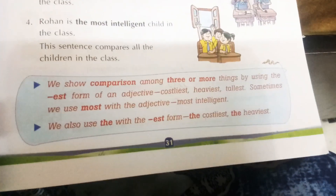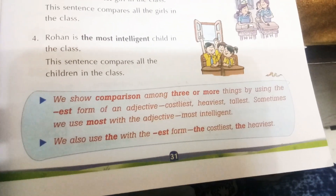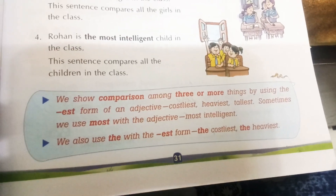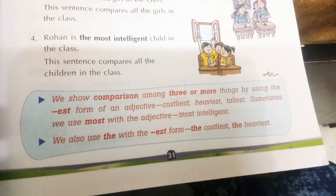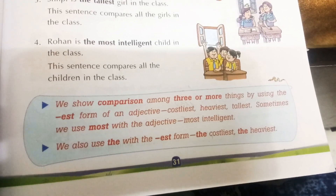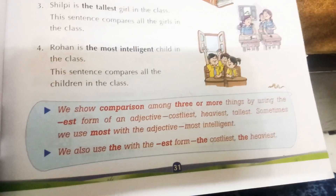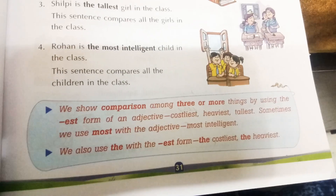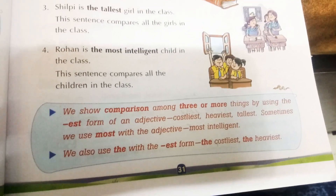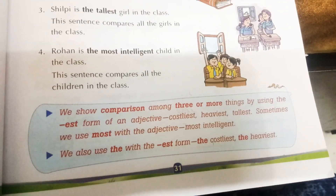Again, the same explanation is given here: we show comparison among three or more things by using the EST form of an adjective — costliest, heaviest, tallest. Sometimes we use 'most' with the adjective — like 'most intelligent'. We also use 'the' with the EST form — like 'the costliest', 'the heaviest'.